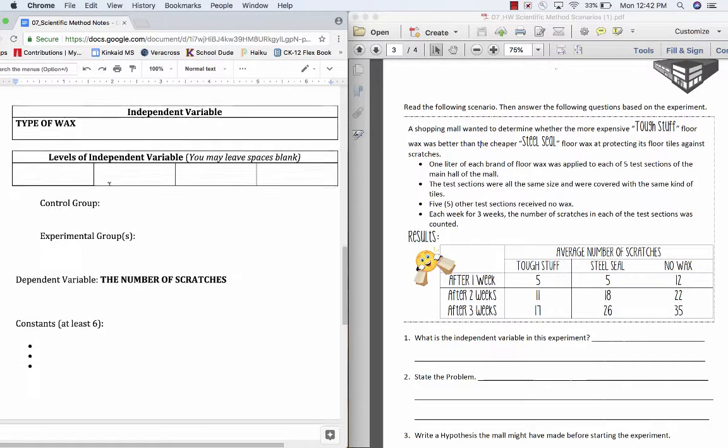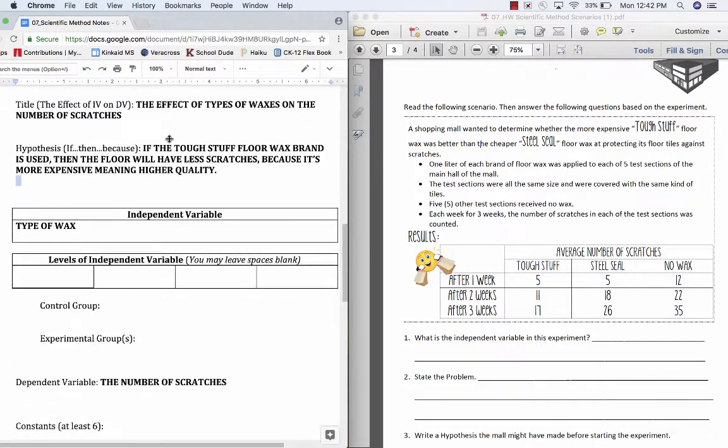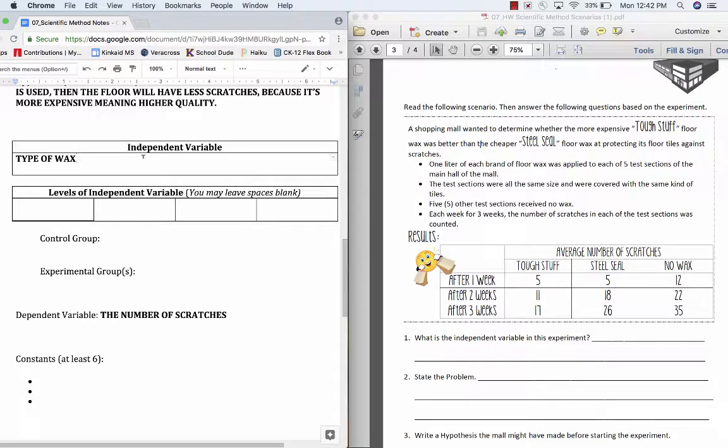Moving on in our EDD, we've talked about our independent variable, which is the type of wax. That's what changes between each of the three groups. Whenever we get to the levels of the independent variable, it might be helpful to think of them as the details of each group. For instance, group one had Tough Stuff, group two had Steel Seal, and lastly, group three was exposed to no wax.